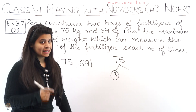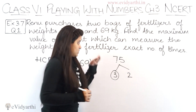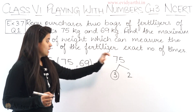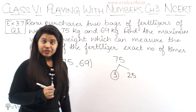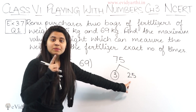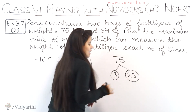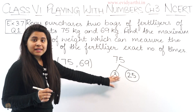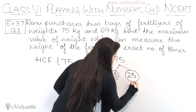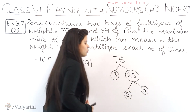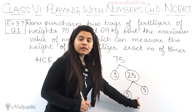Now, 3 multiplied by what gives 75? The largest multiple of 3 below 75 helps us get 25, because 3 into 25 is 75. So 3 and 25 are factors. Since 3 is already prime, we factorize 25 further: 5 into 5 is 25. So the prime factors of 75 are 3, 5, and 5.